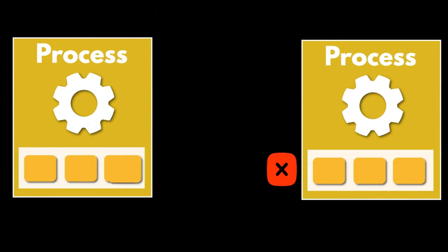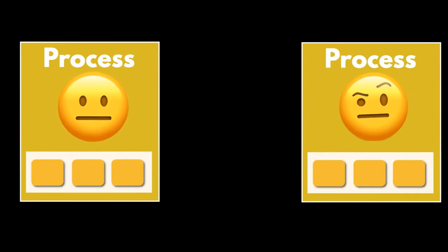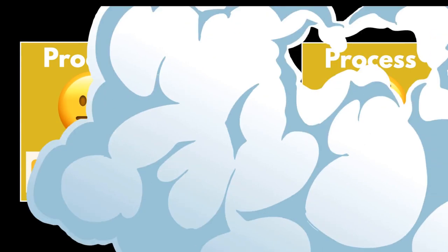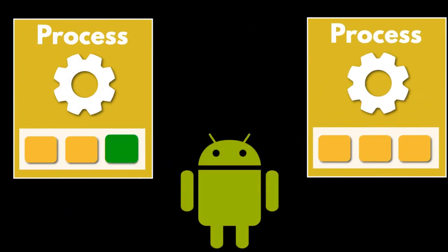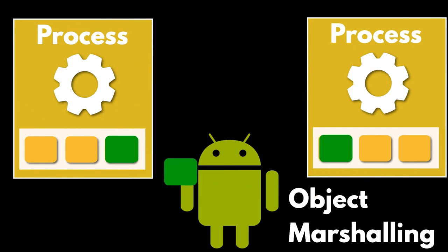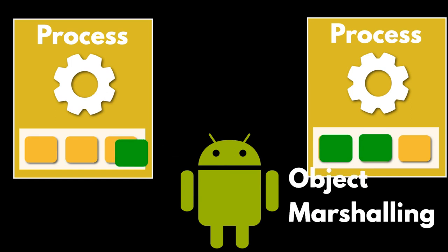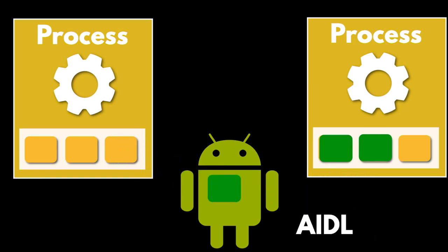In Android, one process cannot access the memory of another process, so they cannot really understand each other. To talk, they need to decompose their objects into primitives that the operating system can understand, and the operating system marshals the object across that boundary for you. The code to do that marshalling is complicated to write, so Android handles it for you with the help of AIDL.